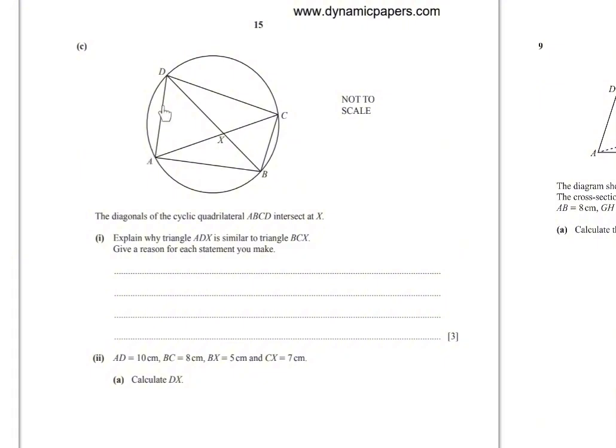Now angle ADP and angle ACP are opposite to the same arc, so they are equal. Same, angle DAC and angle DBC are opposite to the same arc, arc DC, so they are equal. And angle DXA and CXB are vertically opposite angles, so they are equal. So the angles of this triangle equal the angles of that one, so they are similar.